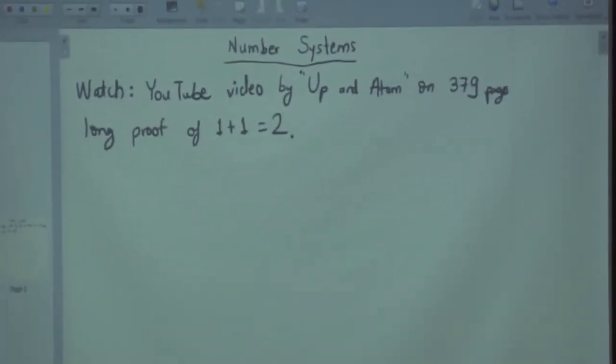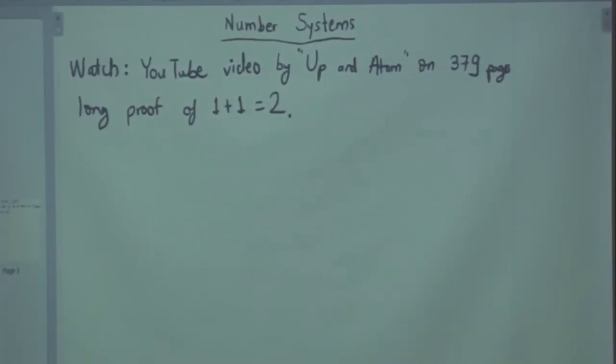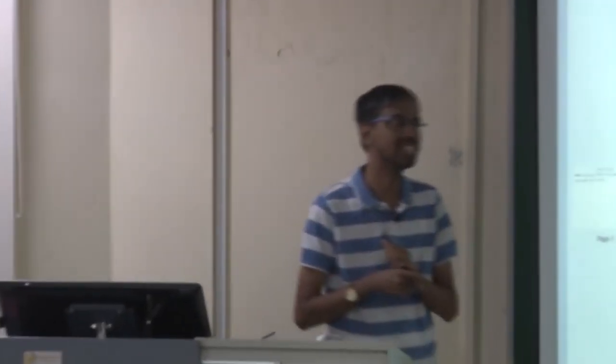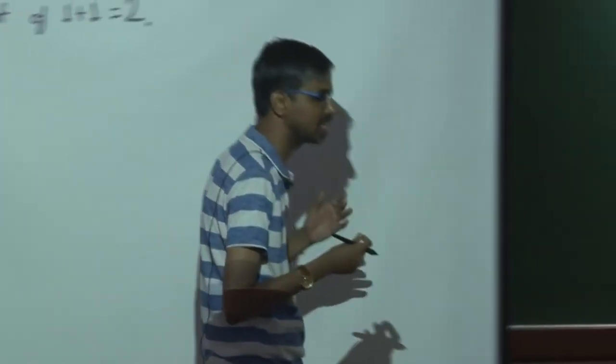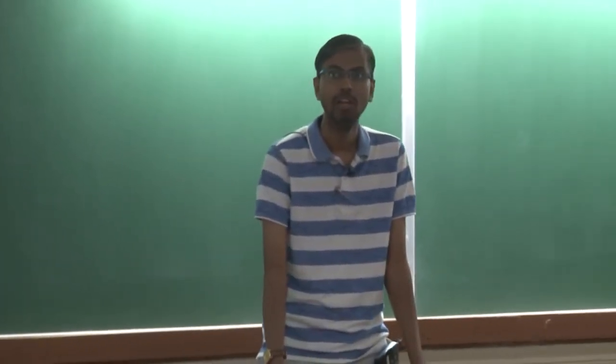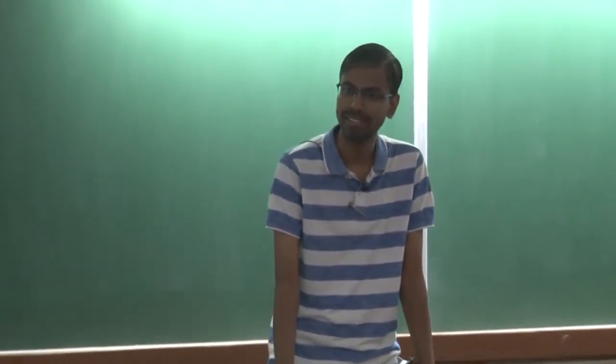There is a 379-page long proof of 1 plus 1 equals 2. If you found yesterday's lecture ridiculous, you will die laughing when you see this. So why are these things important? Because human beings want to formalize things — they want to reason about things without really knowing what things are. Things are black boxes, and therefore logic is the most appropriate language for talking about things.